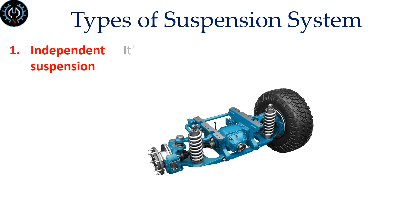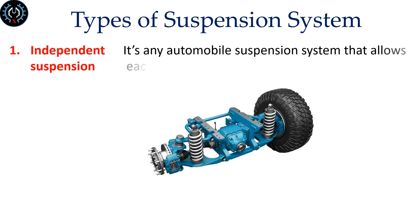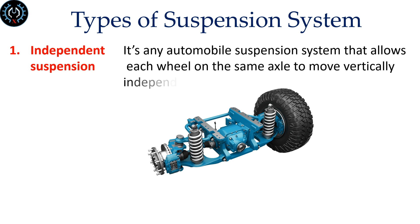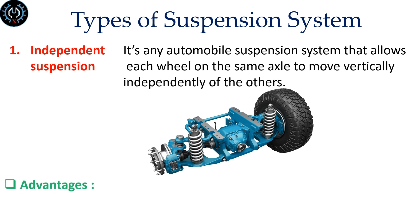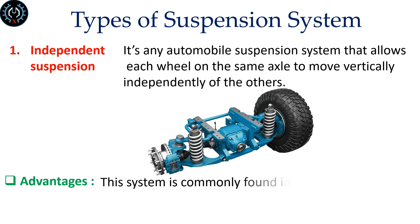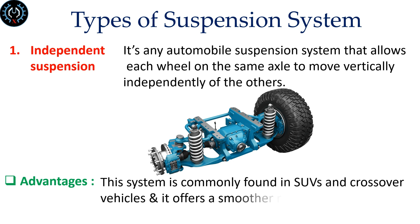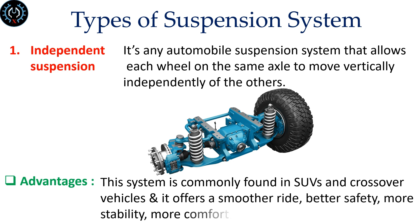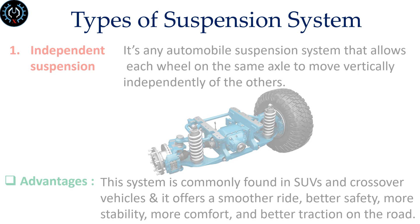Independent Suspension is any automobile suspension system that allows each wheel on the same axle to move vertically independently of the others. This system is commonly found in SUVs and crossover vehicles, and it offers a smoother ride, better safety, more stability, more comfort, and better traction on the road.